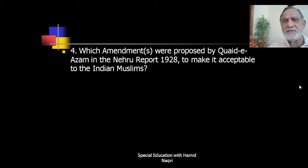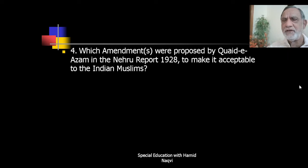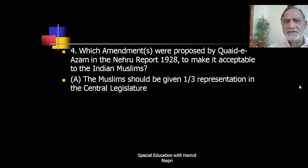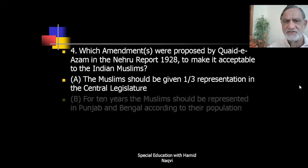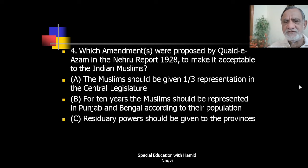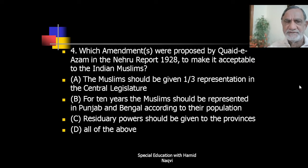Next: which amendments were proposed by Quaid-e-Azam in the Nehru Report 1928 to make it acceptable to Indian Muslims? The options: Muslims should be given one-third representation in the central legislature; for 10 years, Muslims should be represented in Punjab and Bengal according to their population; residual power should be given to the provinces; or all of the above. The correct answer is D — all of the above.